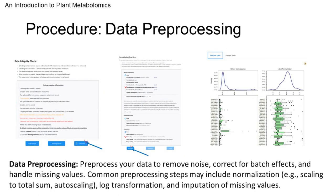Once the data is uploaded, we need to pre-process it to ensure its quality and consistency. This involves removing noise, correcting for batch effects, and handling missing values. Common pre-processing steps include normalization, log transformation, and imputation of missing values. Upon normalization, we'll notice that previously skewed data now exhibit a more normalized distribution, which aids in accurate analysis.